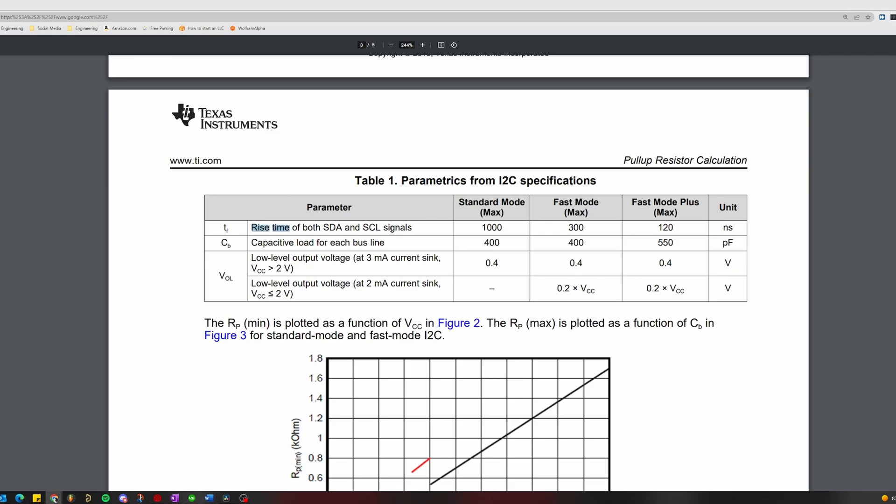For standard mode, a maximum rise time of 1000 nanoseconds or 0.1 microseconds is allowed. For fast mode, a maximum rise time of 300 nanoseconds or 0.03 microseconds is allowed.